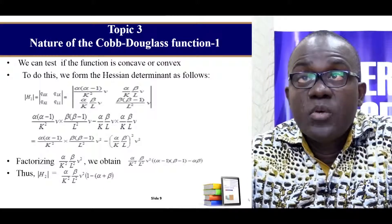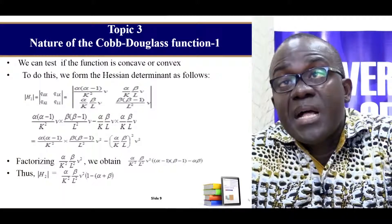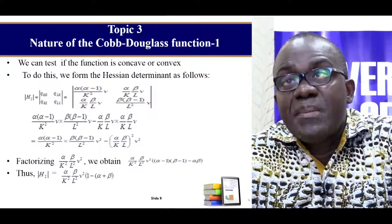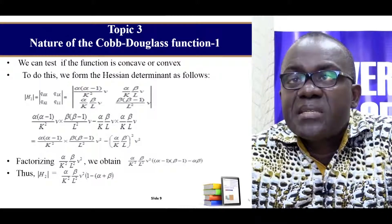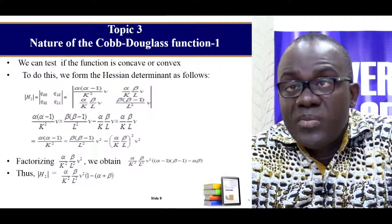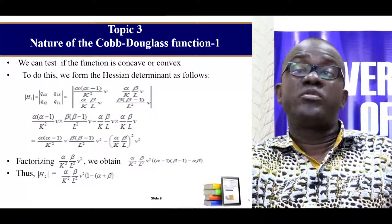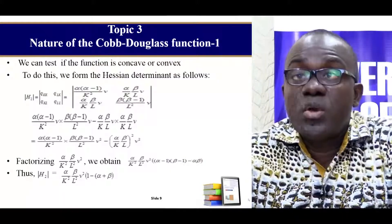We have already found the first and second-order partial derivatives and the cross partials. These are the second-order partial derivatives with respect to K and L, and these are the cross partials. When we insert them into the Hessian determinant and simplify, we get a function of this nature. We can factorize and further simplify to obtain this equation. The question is whether this value will be greater than, less than, or equal to zero — and from that we determine concavity or convexity.